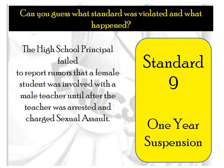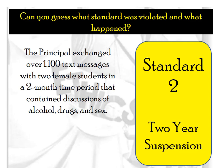A high school principal failed to report rumors that a female student was involved with a male teacher. After the teacher was arrested and charged with sexual assault, the principal — who may have wanted to wait for clear evidence — was found to have broken Standard 9 and received one year of suspension. This shows that if there is any speculation, it's best to go ahead and report, because if it turns out to be true, you can be in trouble as well. In another case, a principal exchanged a large number of text messages with two female students over a two-month period containing inappropriate discussions — that broke Standard 2 and resulted in a two-year suspension.